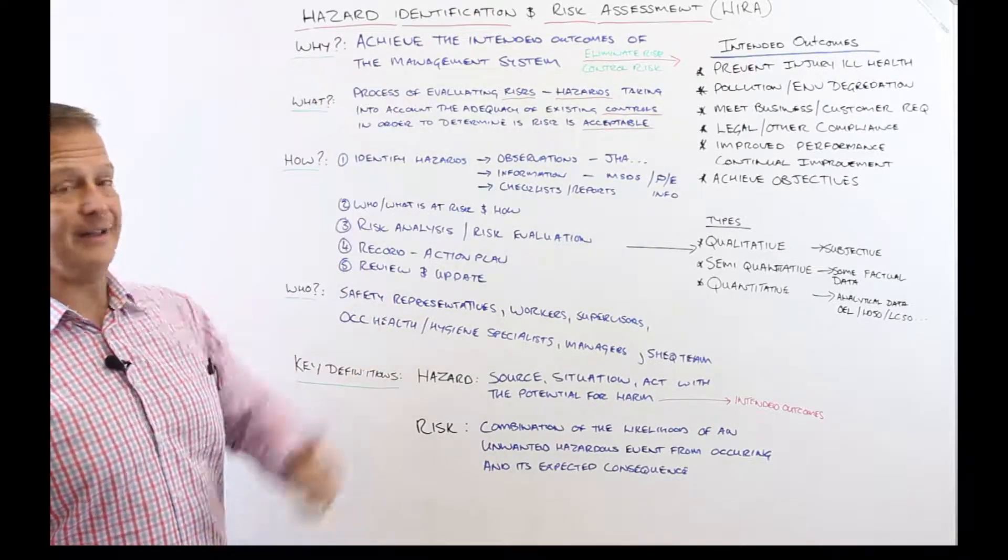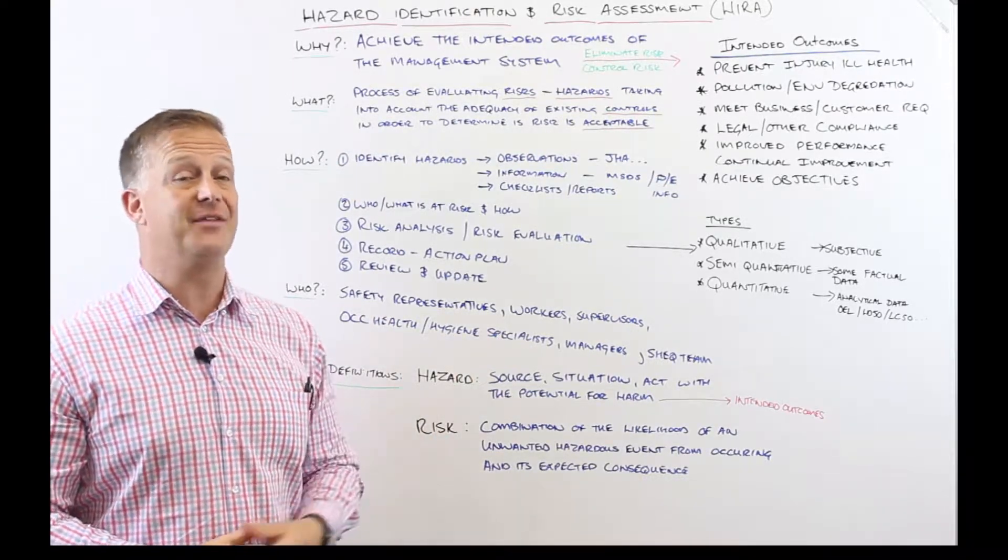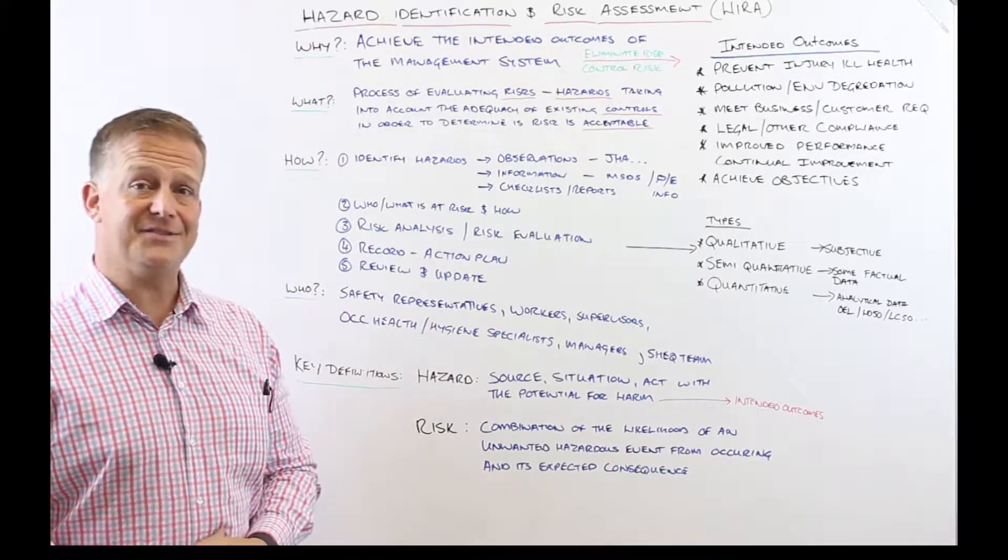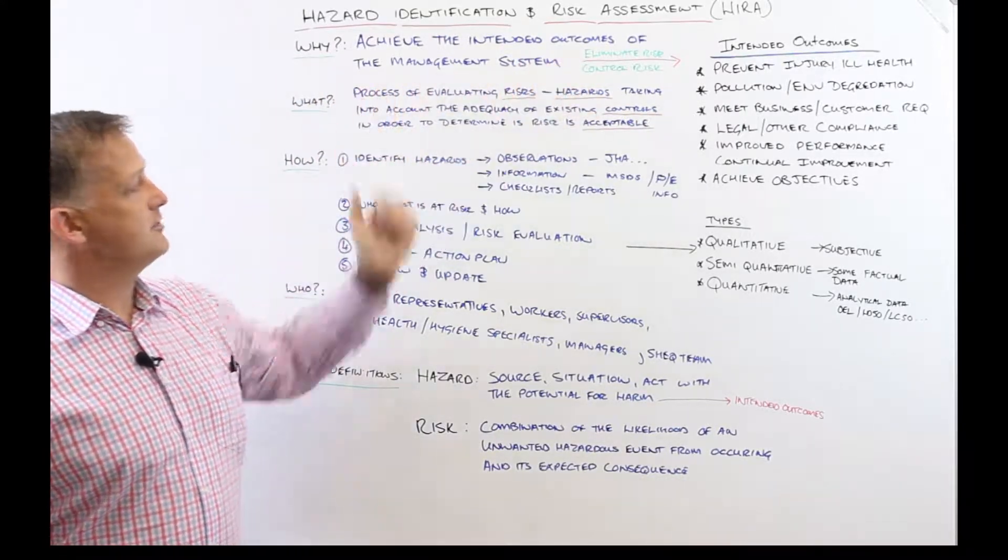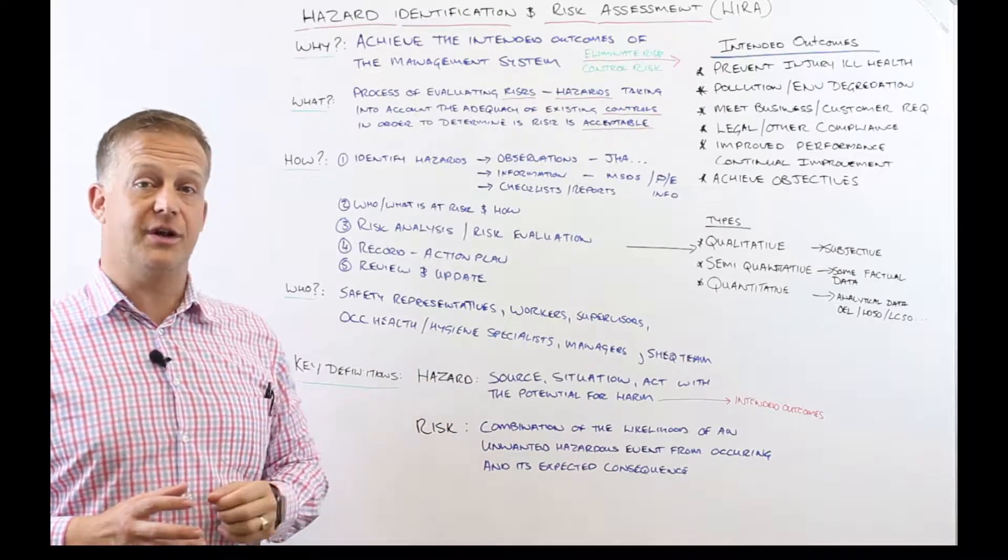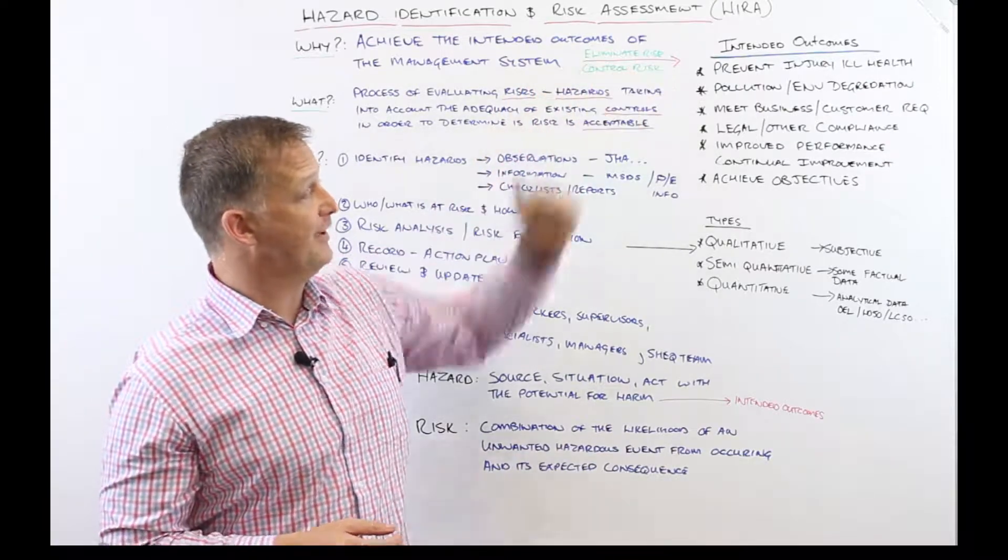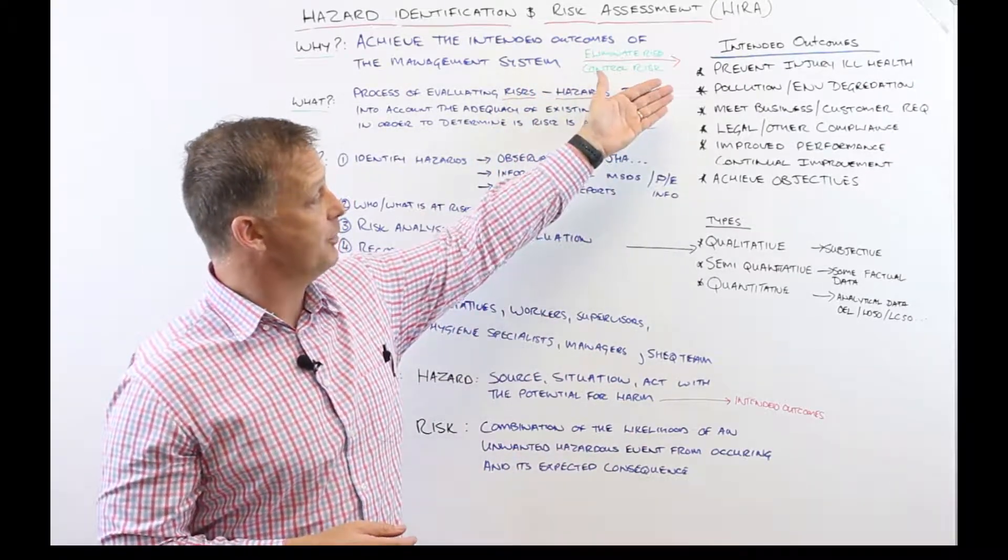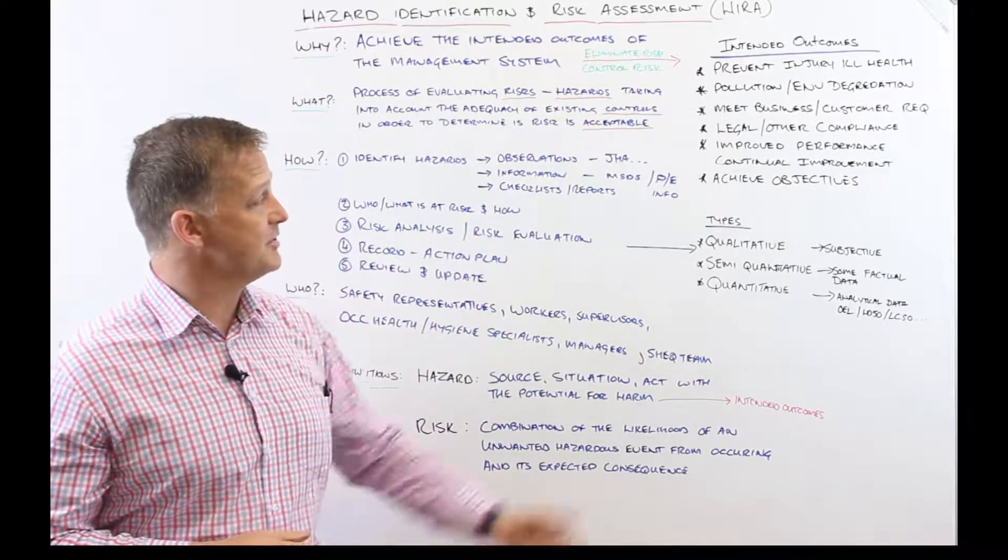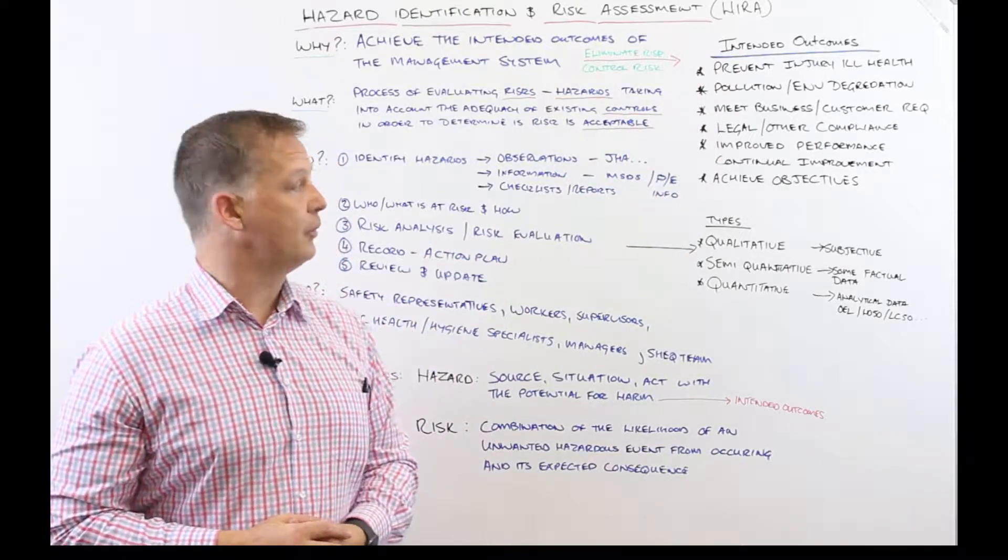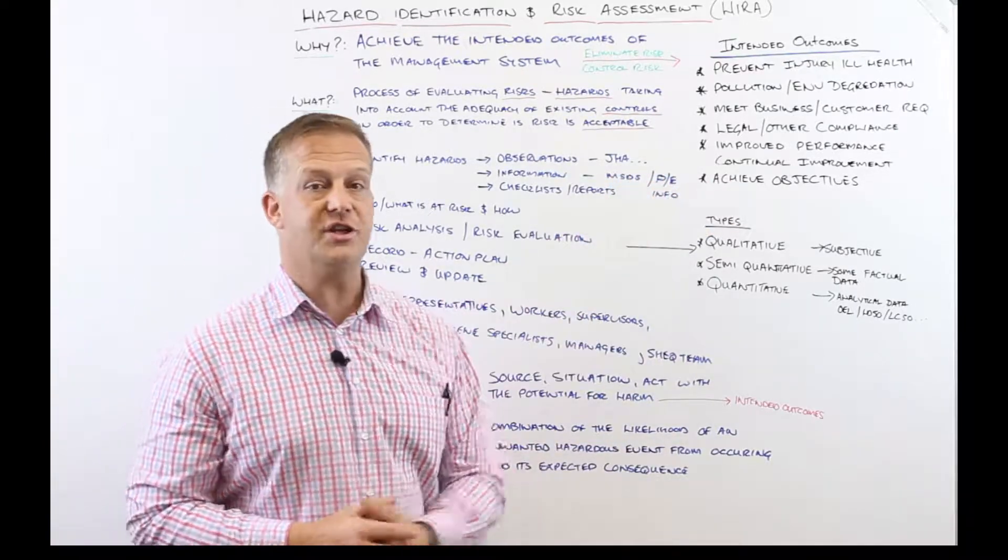So we're going to look at why. It's always key to start off with the why. I always like what Simon Sinek has to say - you have to understand the why. Ultimately we want to achieve the intended outcomes of the management system. Some of the intended outcomes include preventing injury and ill health, preventing pollution and environmental degradation, ensuring you're meeting business needs and customer needs, ensuring compliance to legal and other requirements, improving performance, continually improving your management system, and achieving your objectives.